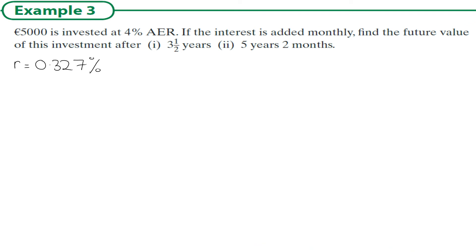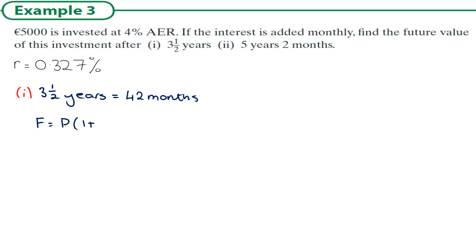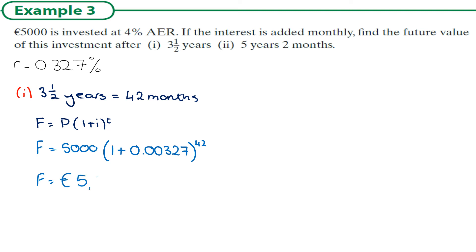Now for the actual questions. Three and a half years converts to 42 months. Using F equals P times one plus r to the power of t with the monthly rate: F equals 5000 times one plus 0.00327 to the power of 42. That goes into the calculator and, rounding to two decimal places as this is money, gives us the future value for part one.